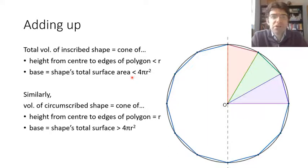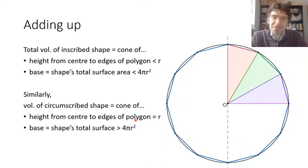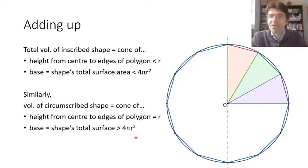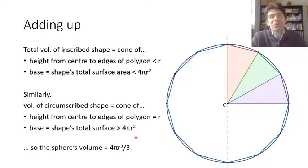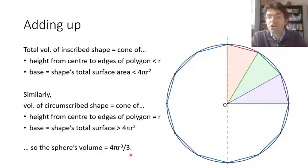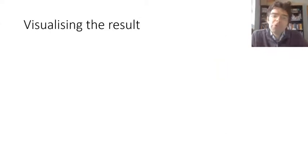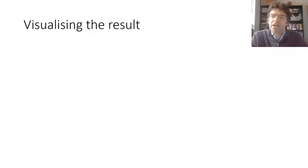Similarly, if we were dealing with the circumscribed shape, we'd do all the same steps and find that its overall volume has to be a third of the radius times its surface area — and again from the last video, we saw that that's more than 4πr². And now we're nearly done, because as we've seen Archimedes do several times, he can simply reason: if the volume of the sphere were anything other than 4πr³/3, we could construct either an inscribed or a circumscribed volume so close to the sphere that it will no longer obey these constraints. So the volume of the sphere turns out to be the same as the volume of a cone whose base is the sphere's surface area and whose height is its radius.